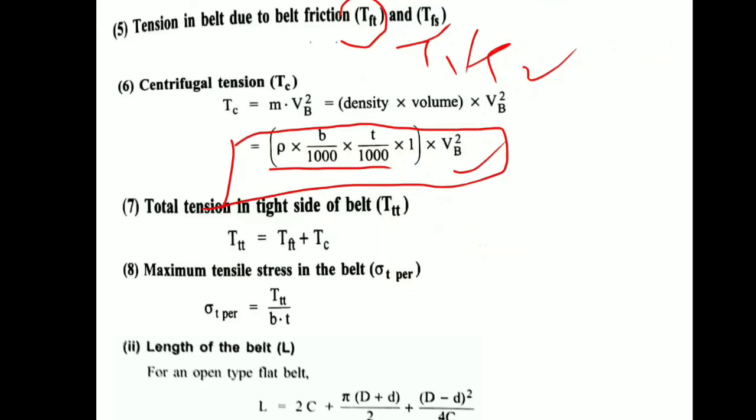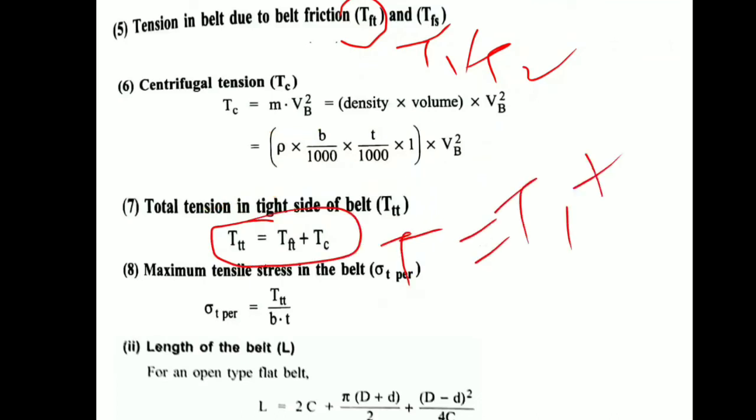Then next part: total tension. As I told you, total tension is capital T equals T1 plus Tc. Now maximum stress we have calculated: σt equals total T, that is T divided by b×t, where b is the width and t is the thickness.